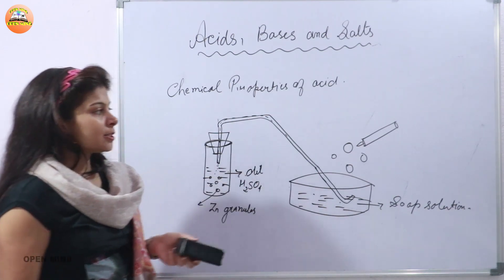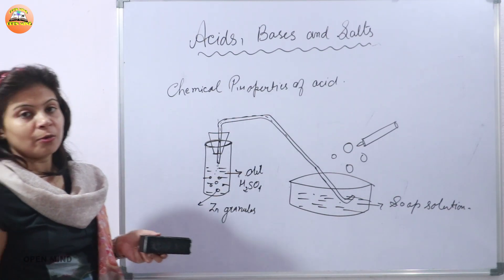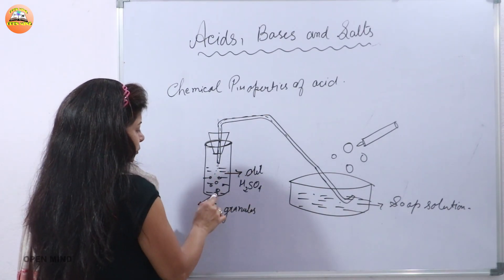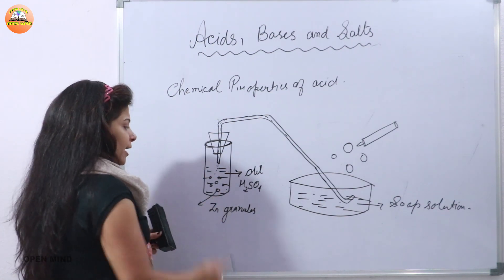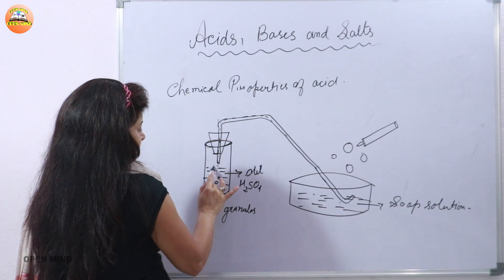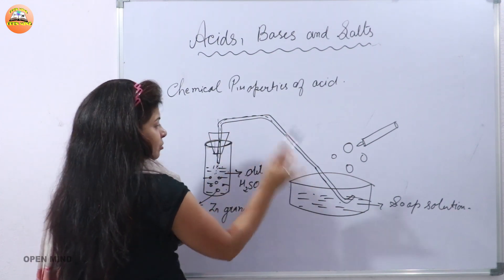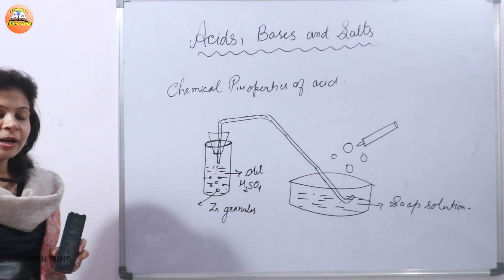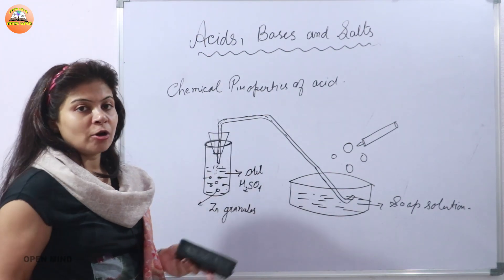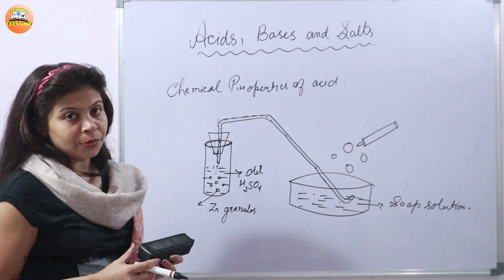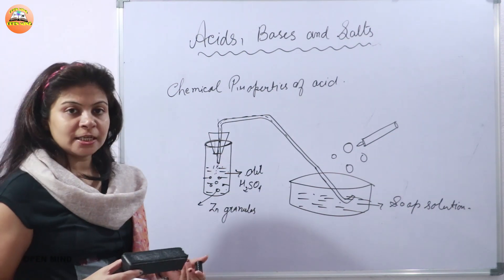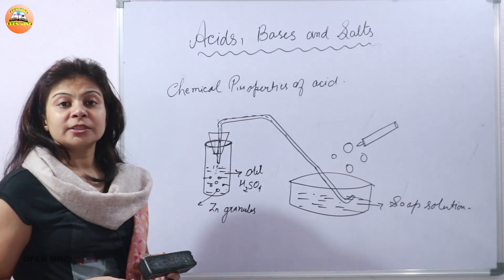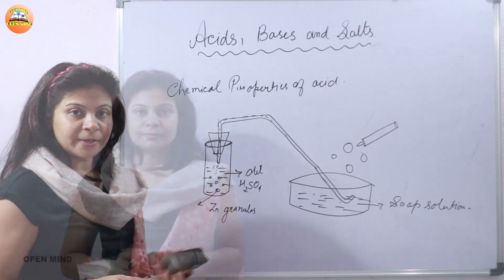The only way to confirm it is hydrogen gas is the burning candle test — it produces a pop sound. Hydrogen gas also gives a bluish flame, but since there is no open flame visible in this activity, we confirm it via the pop sound. This activity proves that when a metal reacts with H2SO4 or any kind of acid, it liberates hydrogen gas. The gas rises, passes through the delivery tube, and we collect hydrogen gas bubbles. This proves the first chemical property of an acid.